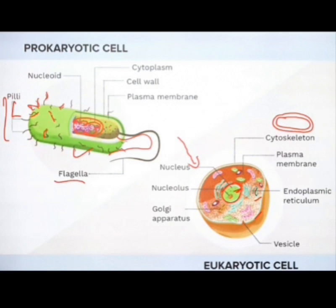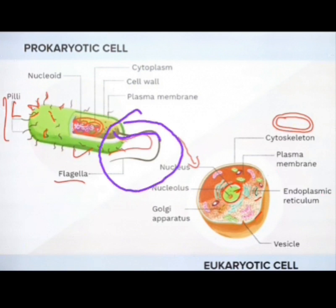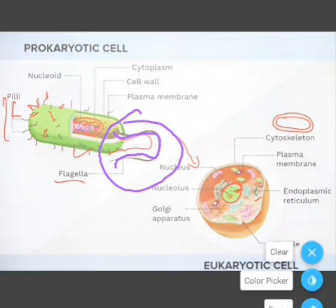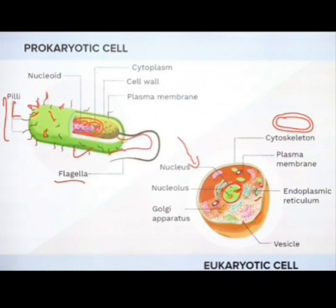There are two types of cells: prokaryotic and eukaryotic. Prokaryotic cells have a flagella, as you can see here, which helps them to move. They have a nucleoid — that is the genetic material, shown as this pink-like structure inside — and no nucleus is present.